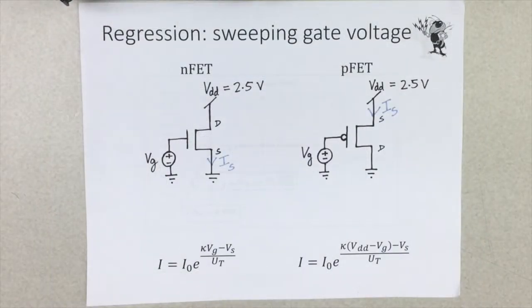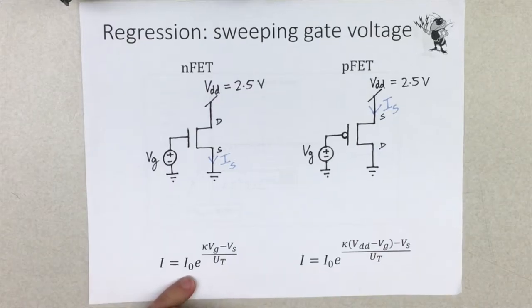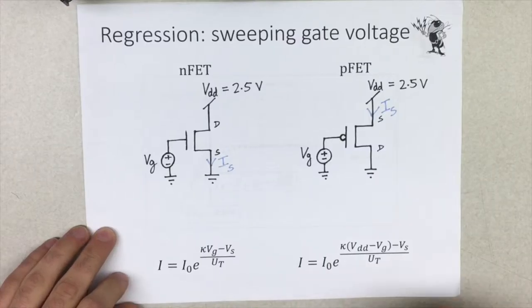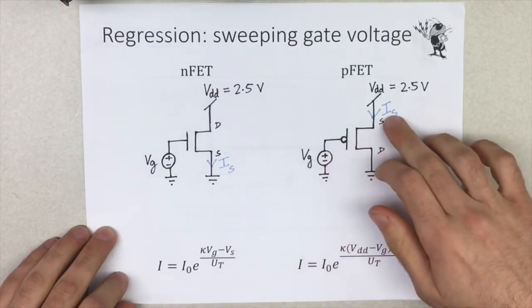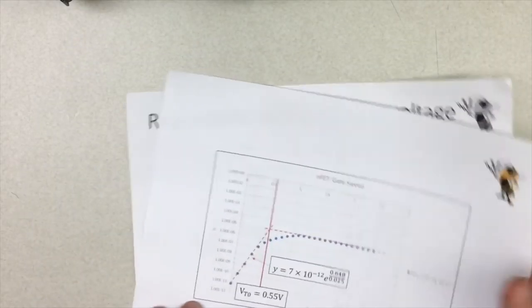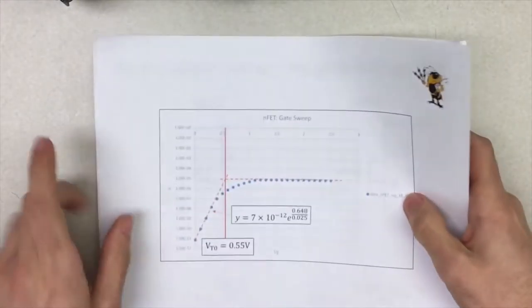So we did gate sweeps of the nFET and PFET. We have the subthreshold current equations right here, which is what we fit to when we plotted VGS. And this is one of the resulting plots from the nFET.